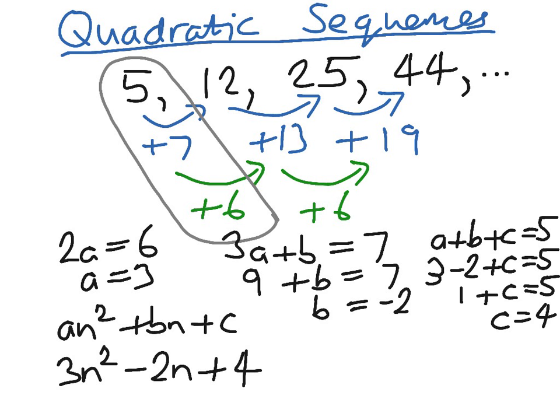So there we have the nth term of our quadratic sequence at the top. As always, double check that it does work. If you check with n equal to 3, that means we should get 25. We have 3 squared is 9, multiplied by 3 is 27,